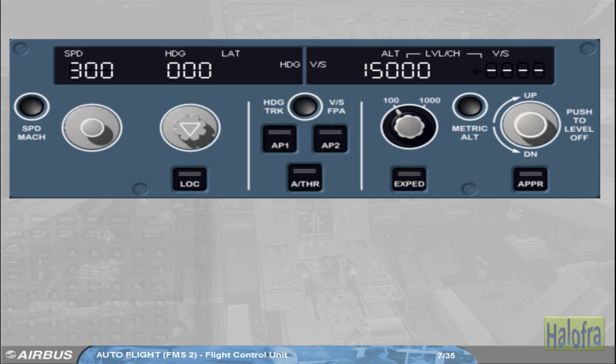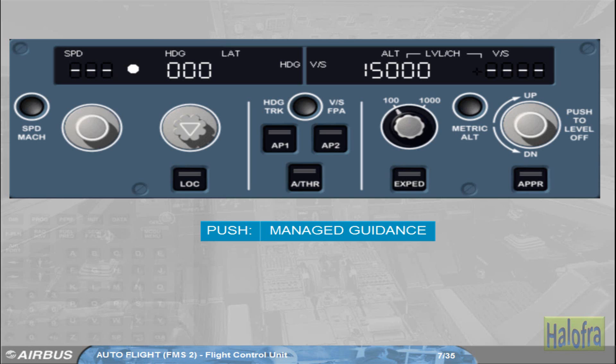On the other hand, if you push a selector knob, you arm or engage a mode which will guide the aircraft to a target managed by the FMGS. Such a mode is a managed mode. In this case, the associated window — except the altitude one — displays dashes with a white dot.